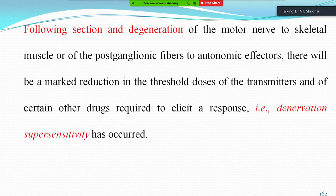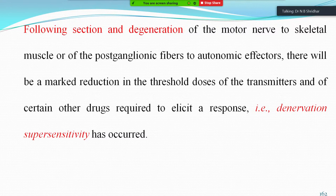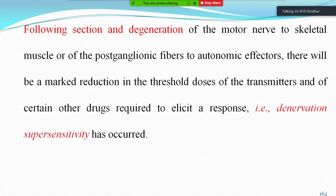Following section and degeneration of the motor nerve to skeletal muscle, or of post-ganglionic fibers to autonomic effectors, there will be a marked reduction in the threshold dose of transmitters required to elicit a response — this is called denervation supersensitivity. Denervation supersensitivity is the increased sensitivity of an autonomic or post-ganglionic fiber whenever the nerve supplied to the skeletal muscle is cut, because the threshold is decreased to neurotransmitters.